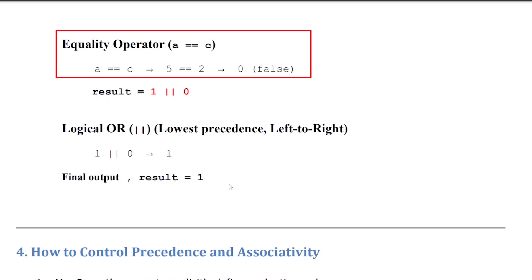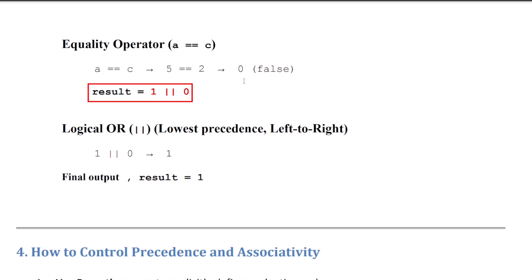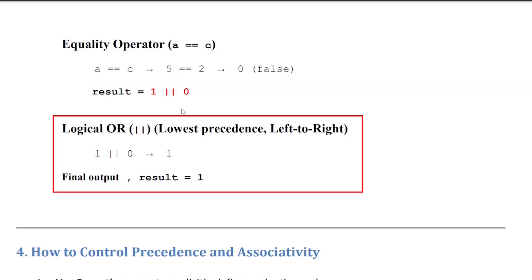So the expression becomes result = 1 || 0. The logical OR operation: 1 OR 0 returns 1, since at least one operand is true. That 1 is assigned to the variable result. So the final result is 1.